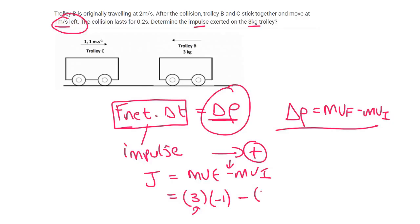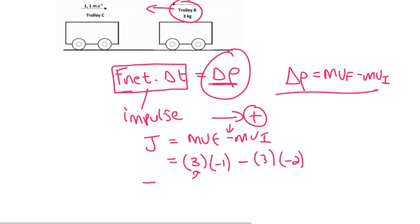And then the mass is 3 and trolley B's initial velocity, they tell us here, trolley B is originally traveling at 2. And we can see from the diagram that that's to the left. So we would have to say negative again. And so if we go work out the impulse, we'll see that the answer is 3.